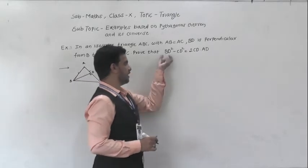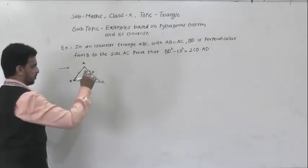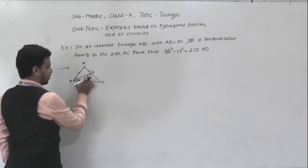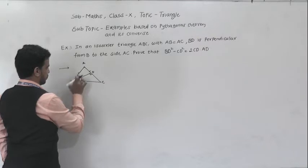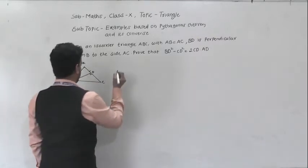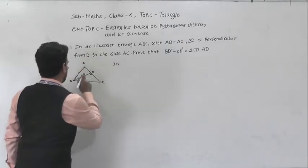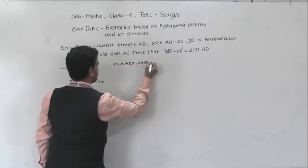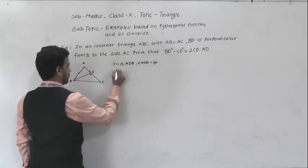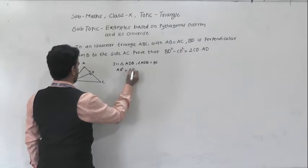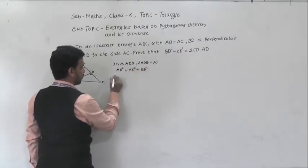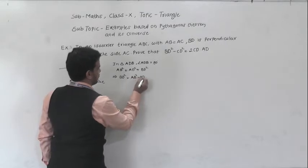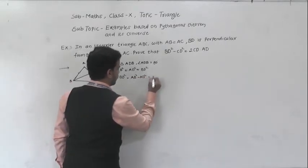We start from LHS: BD squared minus CD squared. First, find BD squared using triangle ADB. In triangle ADB, angle ADB is 90 degrees. By Pythagoras theorem, AB squared equals AD squared plus BD squared. So BD squared equals AB squared minus AD squared. This is equation 1. For CD squared, use triangle BDC. In triangle BDC, angle BDC is 90 degrees. By Pythagoras theorem, BC squared equals BD squared plus CD squared. So CD squared equals BC squared minus BD squared. This is equation 2.